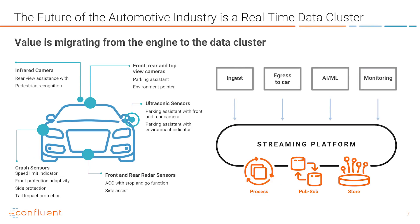The auto industry is one of these industries. It's moving away from a world where car companies shipped a hardware product and their customers were dealerships, to a world where they are now offering an integrated hardware and software product and an ongoing service that powers the interaction with their customers. The combination of connected, self-driving, and electric cars, and even cars that are operated as a service, is a huge transition that's going to be happening over the next decade.